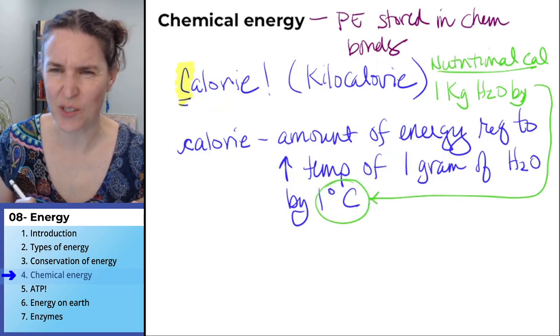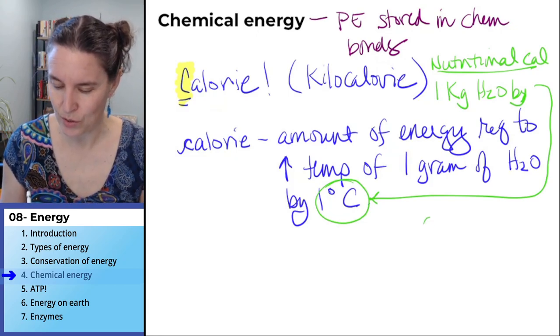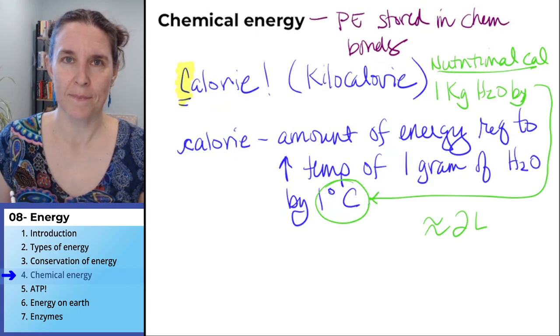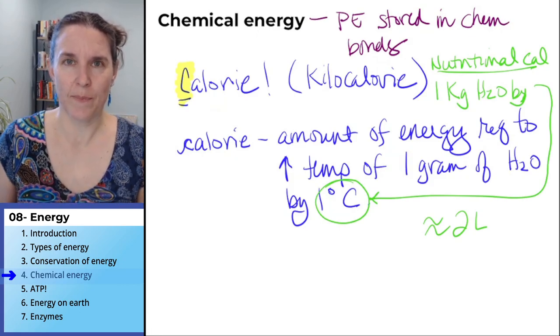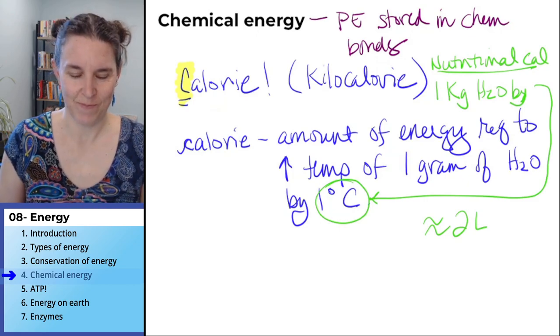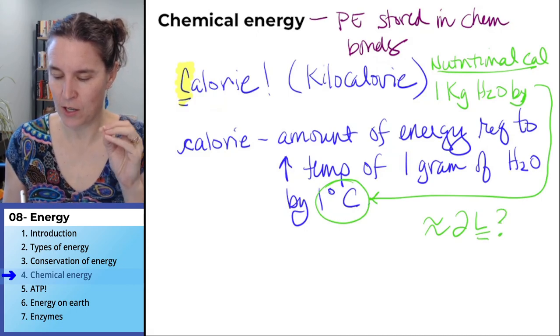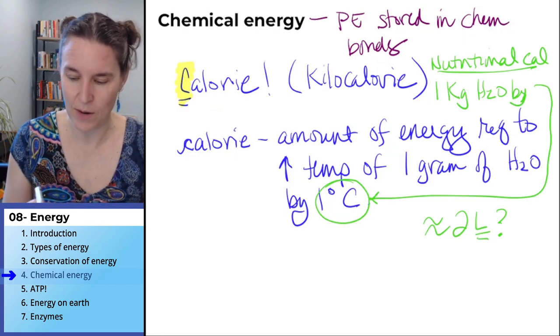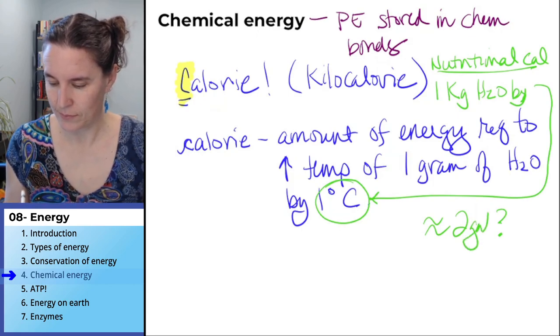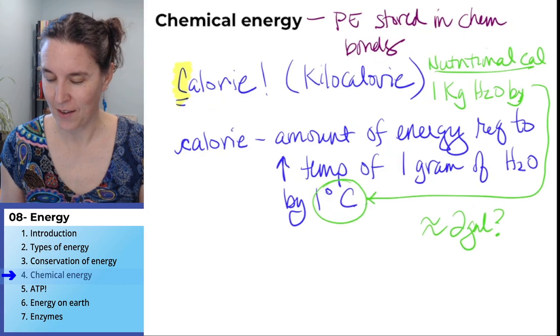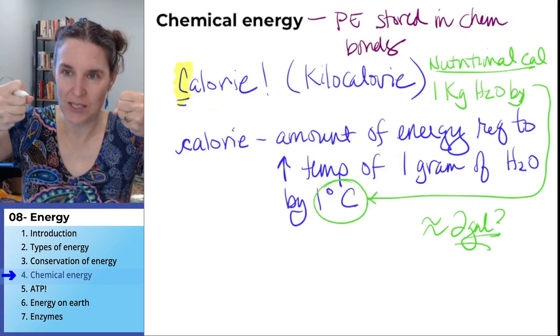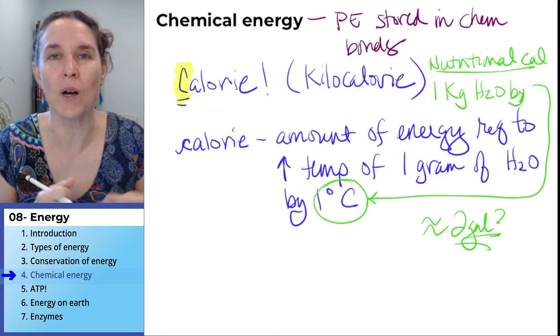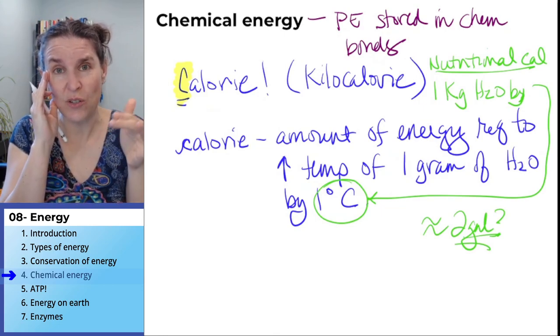A kilogram of water is about two gallons, so two milk jugs of water increased by one degree Celsius. That's one nutritional Calorie. Doesn't a kilocalorie seem really big?